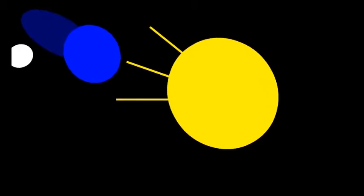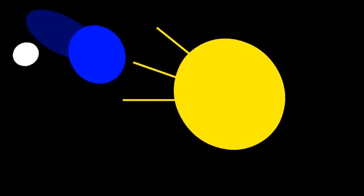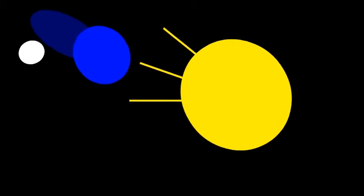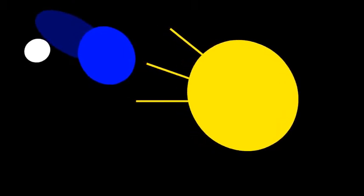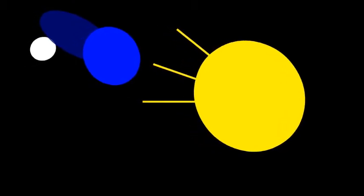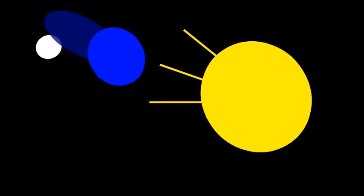A lunar eclipse happens when the moon passes in the shadow of the Earth and becomes darkened. Like a tree, a building, or yourself, the Earth casts a shadow due to sunlight.